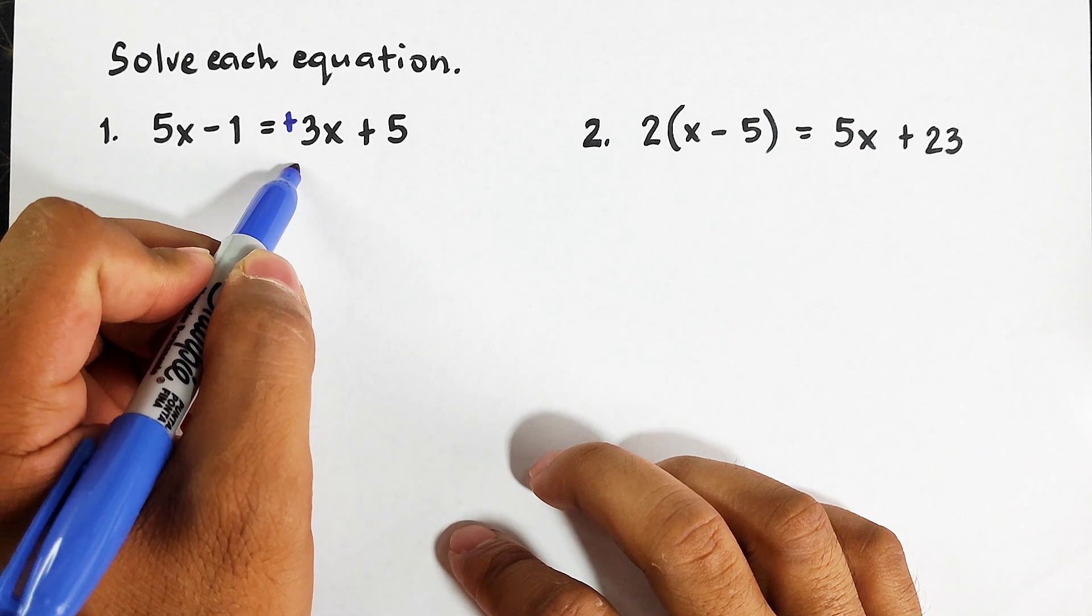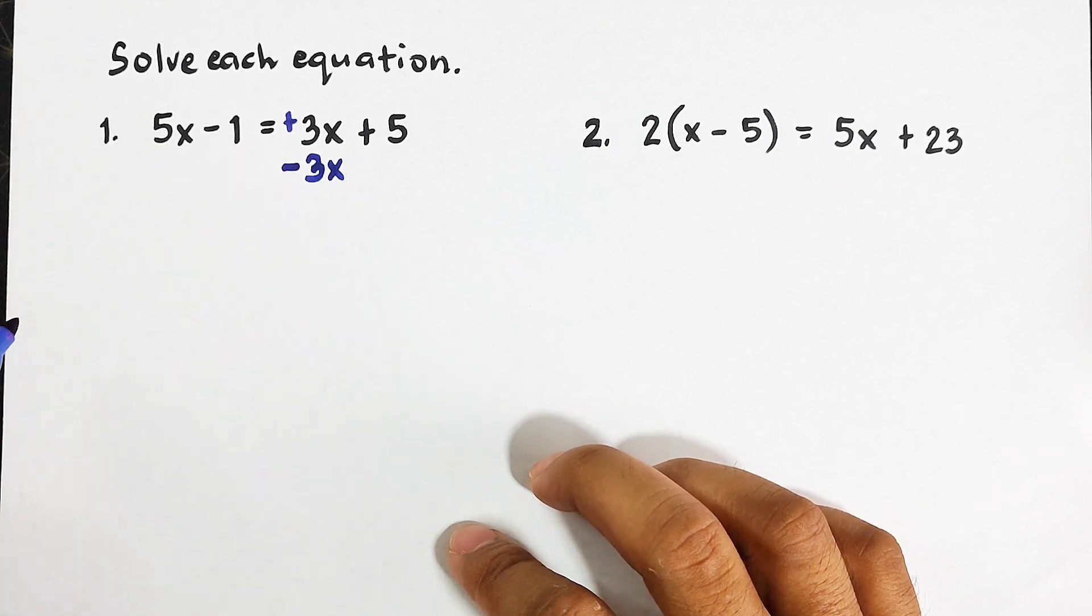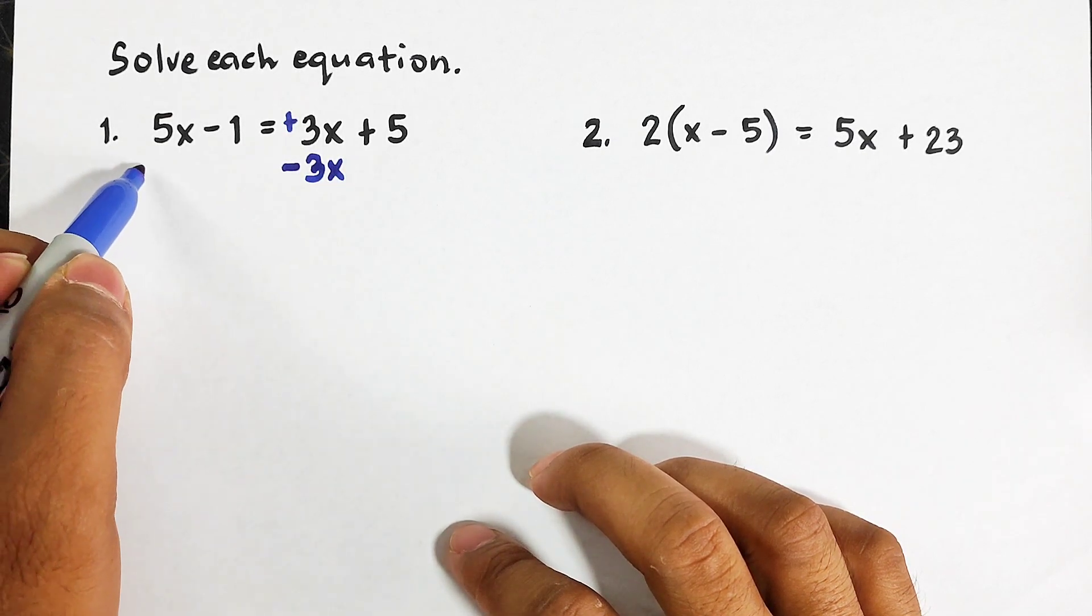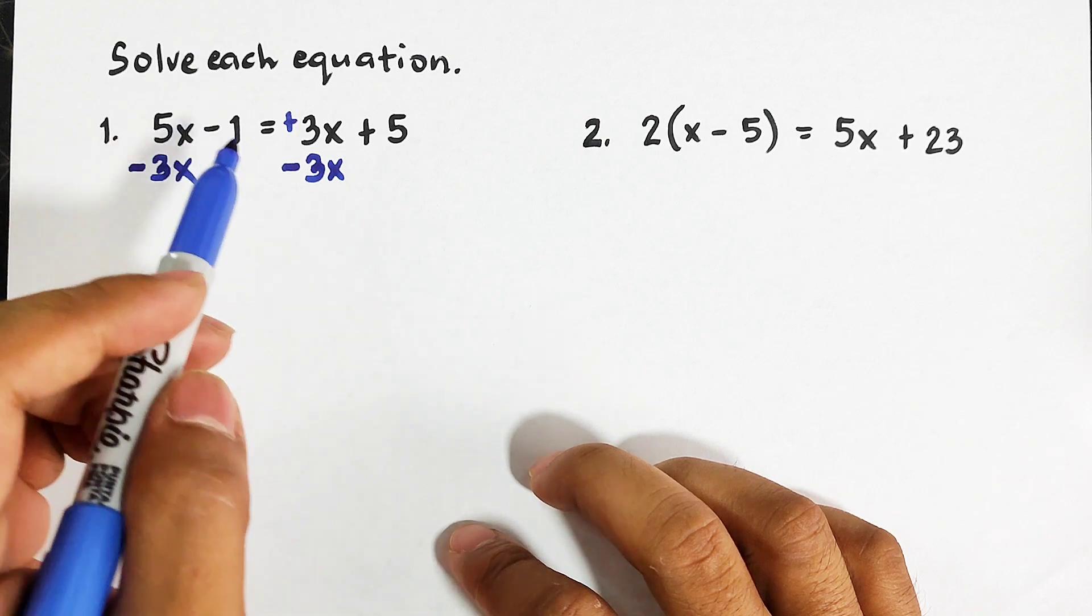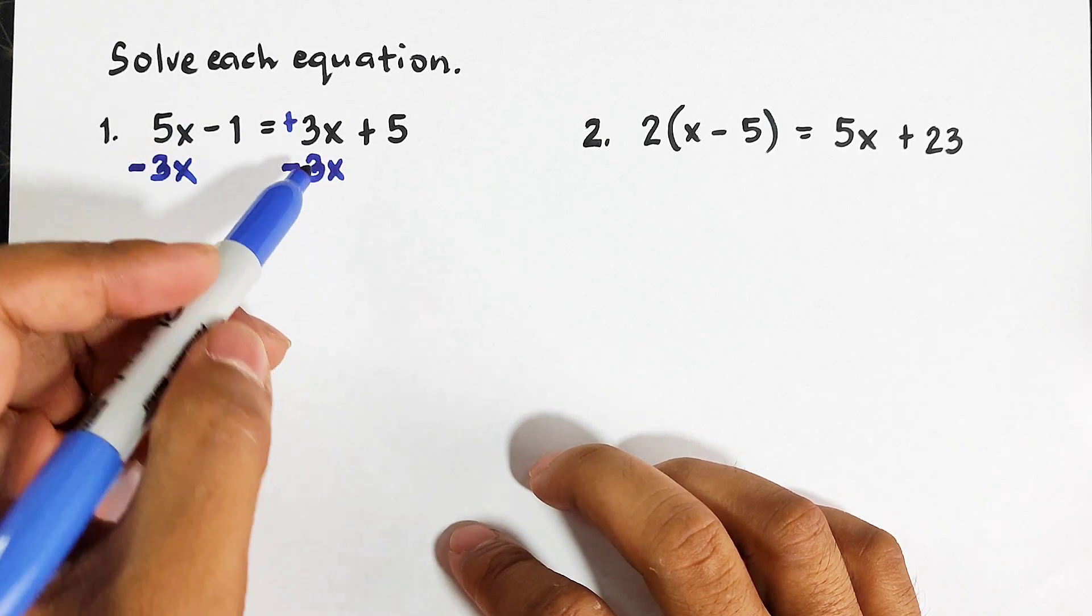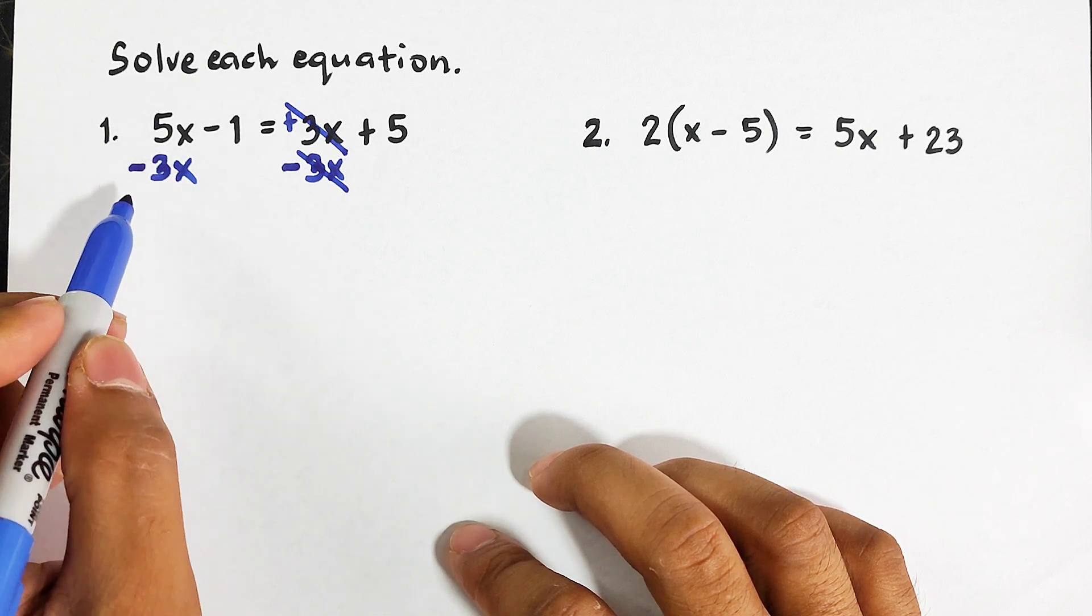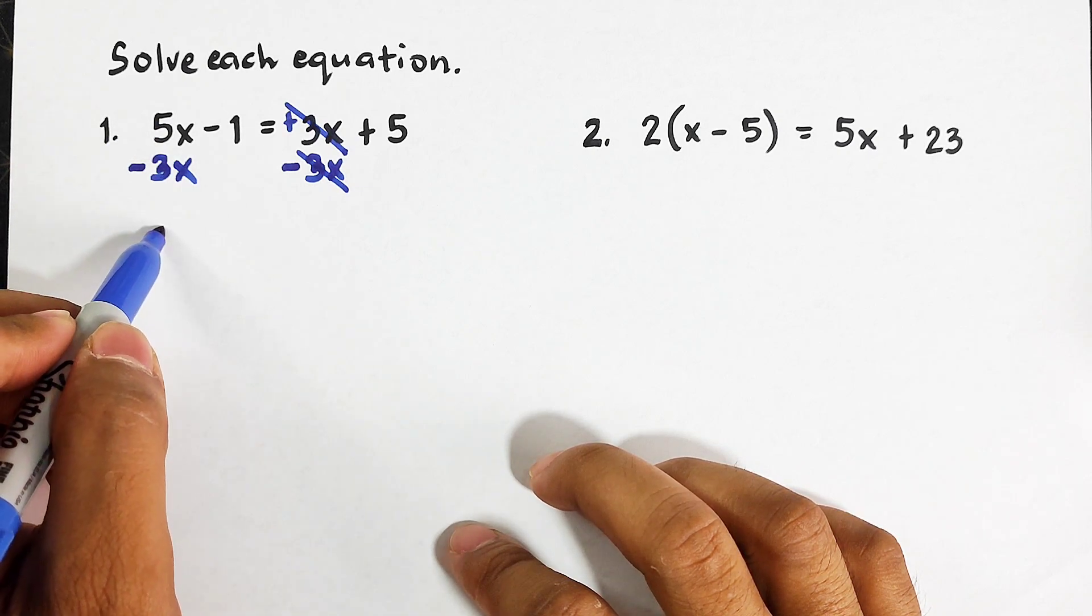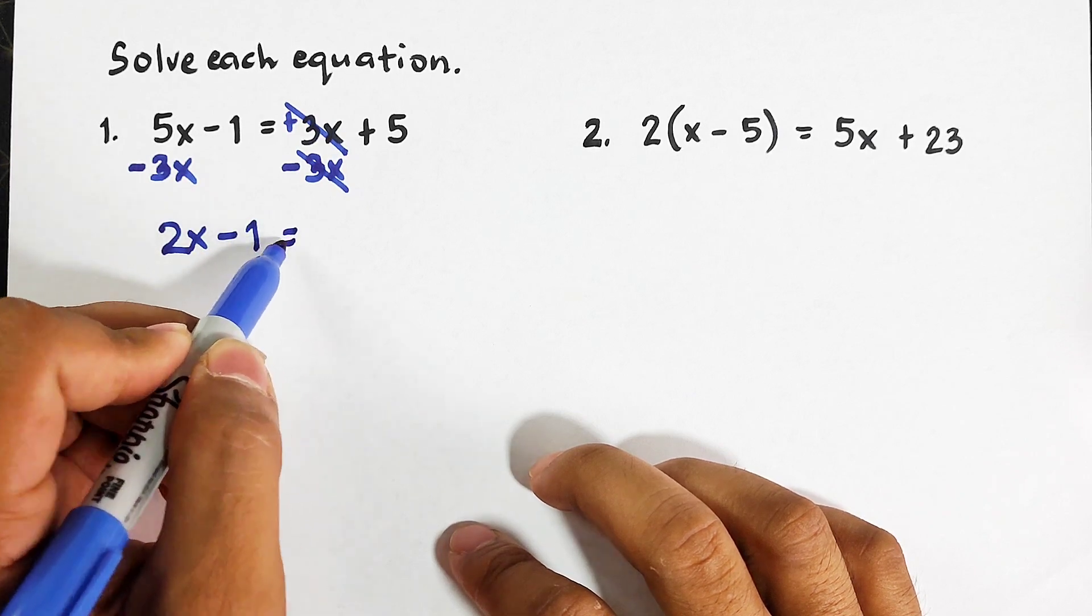What we need is to subtract 3x here. To make it balance, we also need to subtract 3x on the left side of the equation. 3x - 3x is zero. 5x - 3x, that would be 2x - 1 = 5.